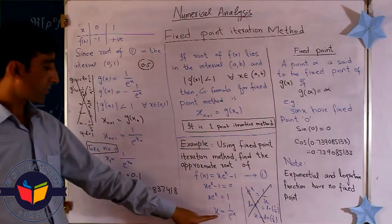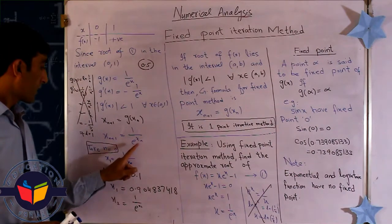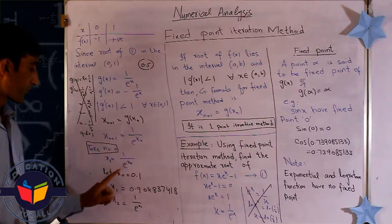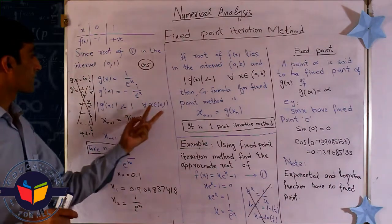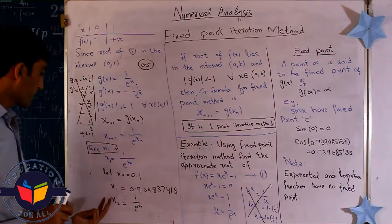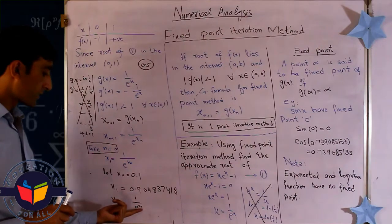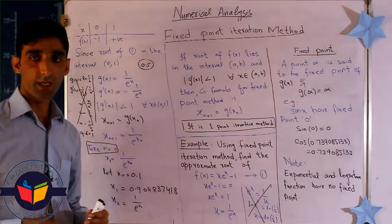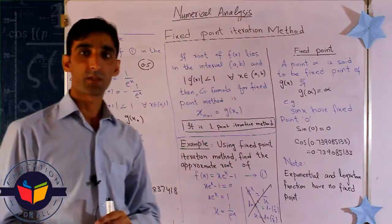We write the iteration formula as x_{n+1} = 1/e^{x_n}. Substituting n = 0, we get x_1 = 1/e^{x_0}. Let x_0 = 0.1; then x_1 is computed, and substituting n = 1 gives x_2 = 1/e^{x_1}. We continue this process, using each result in the next step, until the result repeats. Thank you for watching Education for All.